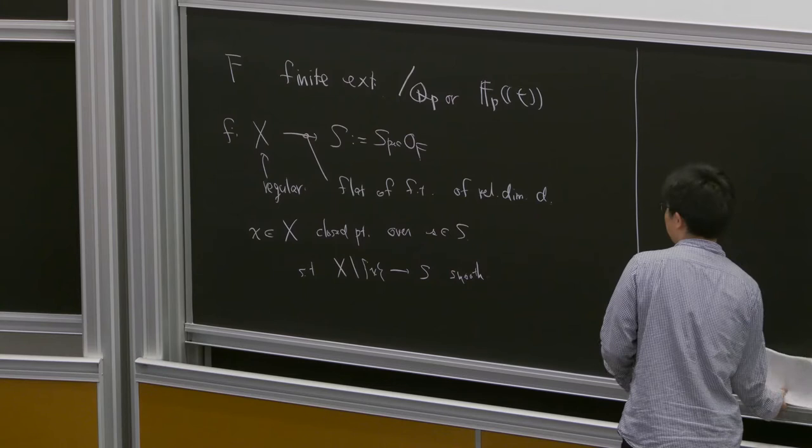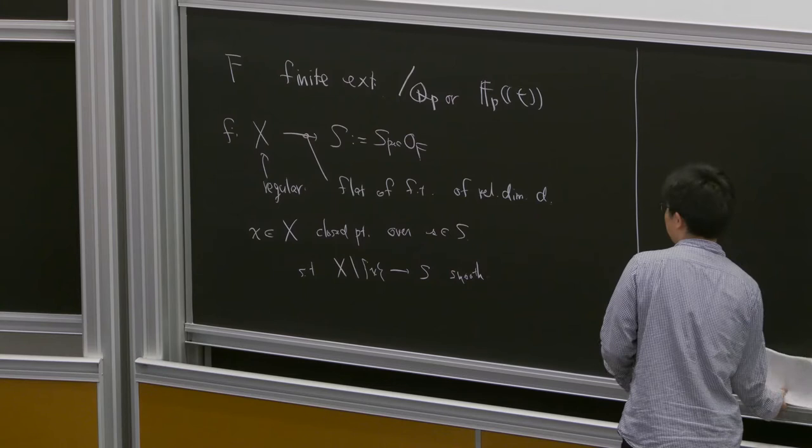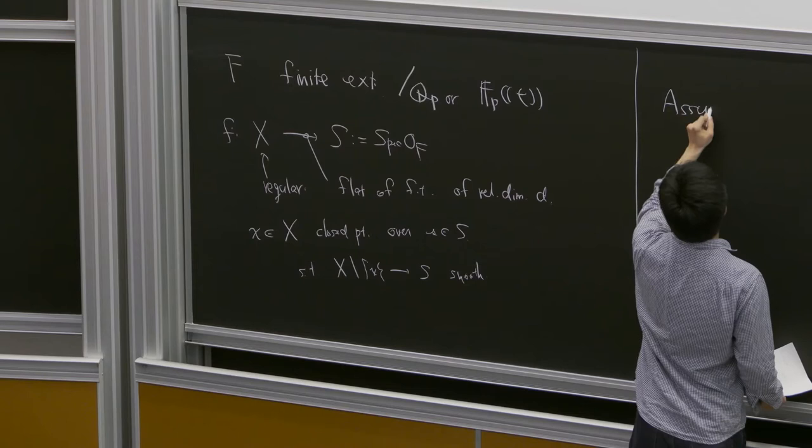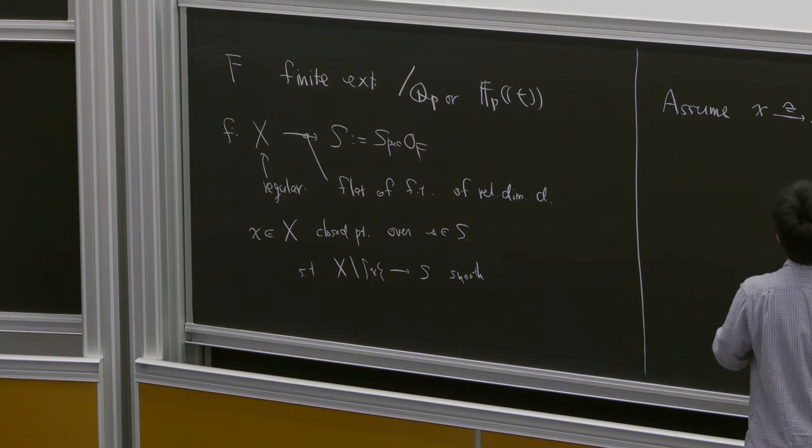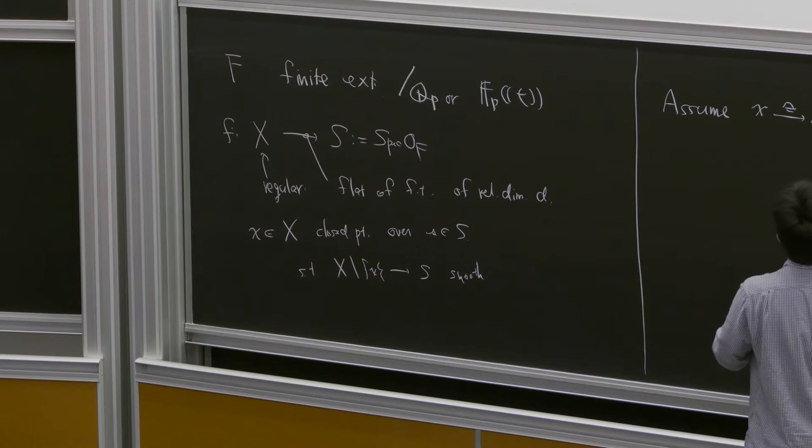For simplicity in the introduction, I assume that this x is a k-rational point. So x maps to the closed point of S. But this is for simplicity. We can get this situation after taking an unramified extension.